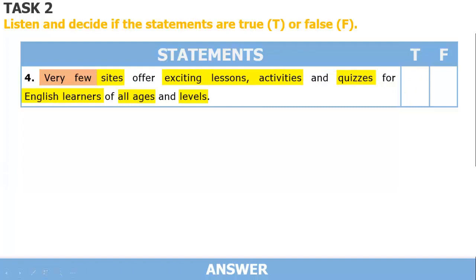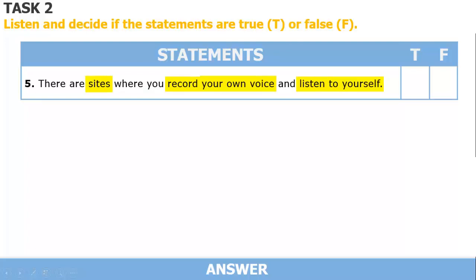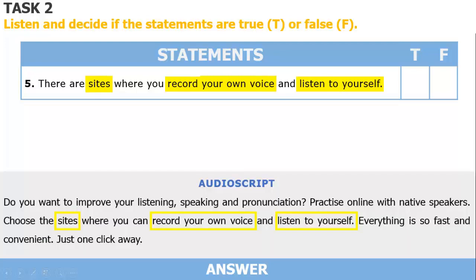What is the answer for sentence number 4? The answer is false. Why? If you got the information — 'Many sites offer exciting lessons, activities, and quizzes for English learners of all ages and levels' — the correct information is 'many sites,' not 'very few sites,' right? How about the last statement? Choose the sites where you can record your own voice and listen to yourself. So, the answer is true.